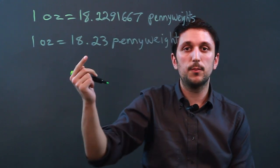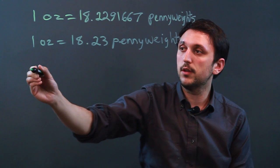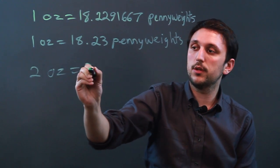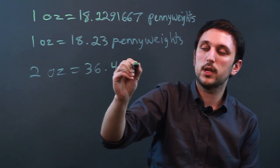And if that's the case, then you can do math based on that. If you have say two ounces, well that's going to equal 36.46 pennyweights.